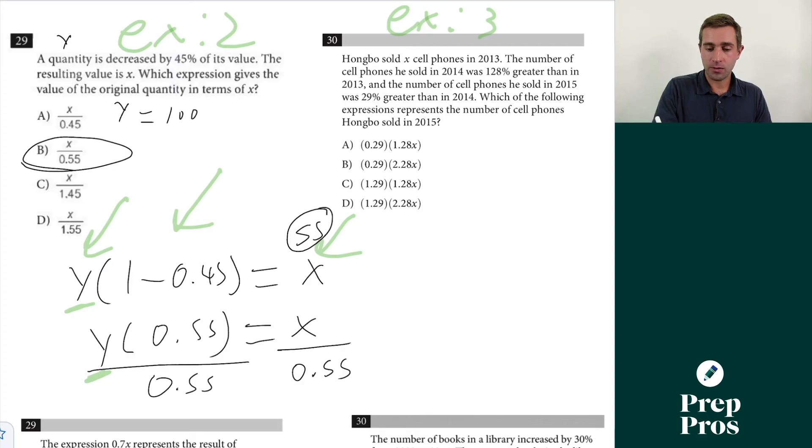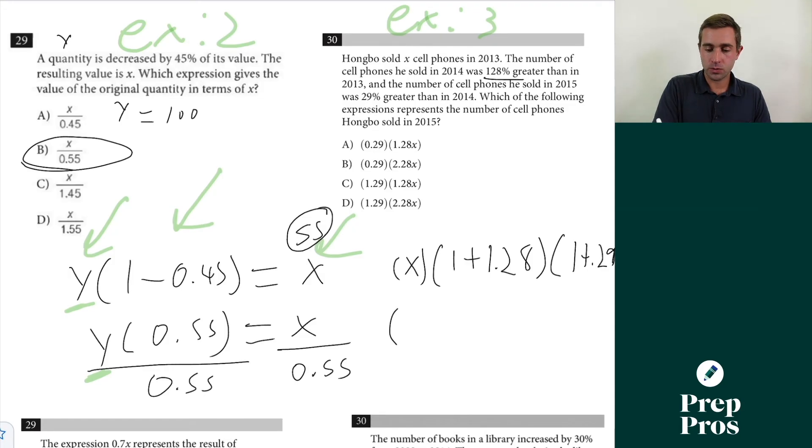The number that he sold in 2014 was 128% greater than in 2013. So x is going to equal our 2013 value. Now this is going to be the same as one plus, and since it's 128%, it's going to be 1.28 is what we're adding in, because 128% we're adding in 1.28. And the number of cell phones he sold in 2015 was 29% greater than 2014. That's going to be the same as one plus 0.29. So we're going to have x times 2.28 times 1.29. Now we just have to see which answer choice gives us one that looks like that, and that's simply going to be d.